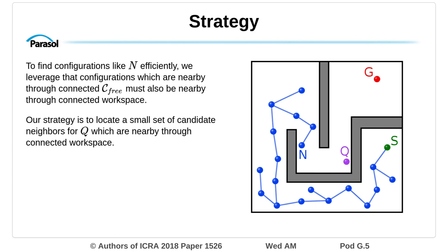To find configurations like N efficiently, we leverage that configurations which are nearby through connected C free must also be nearby through connected workspace.